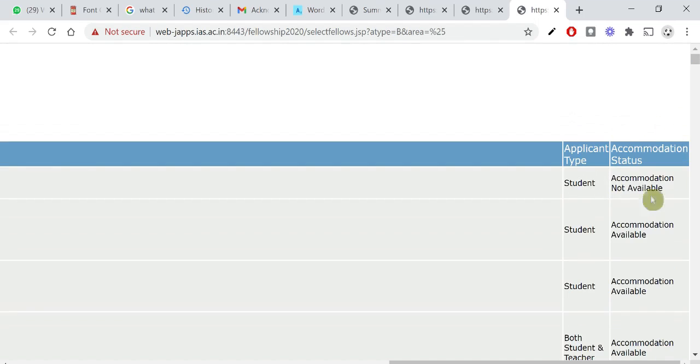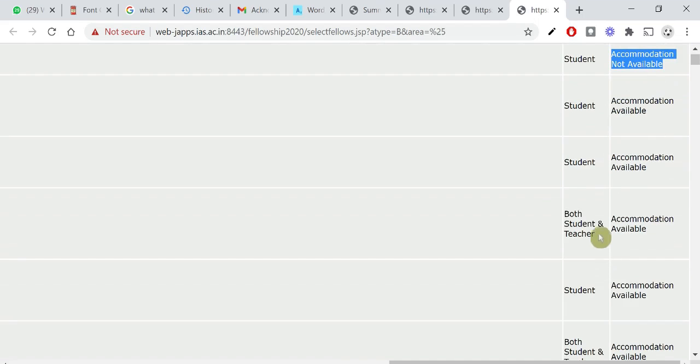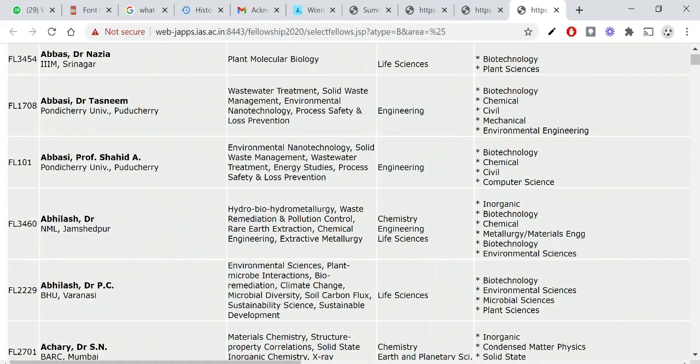For example, for the first guide, only students can apply and accommodation is not available. For the fifth guide, both students and teachers can apply and accommodation is also available. The guide is Dr. Abhilash NLM Jamshadpur, who is specialized in the area of chemistry.